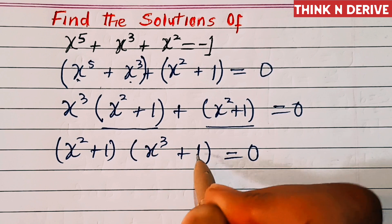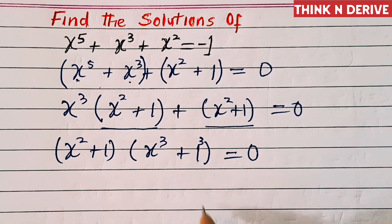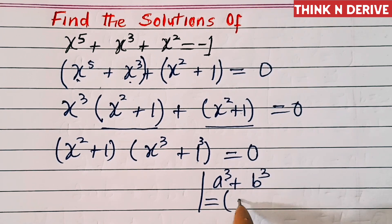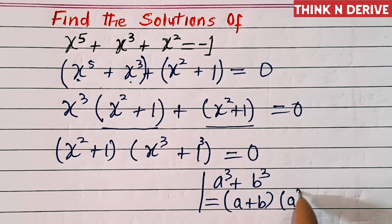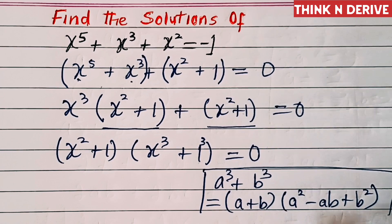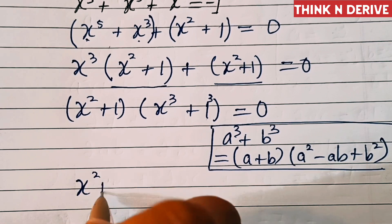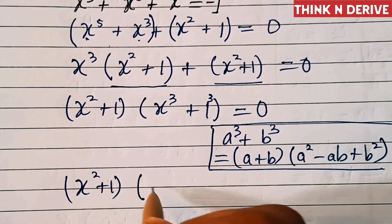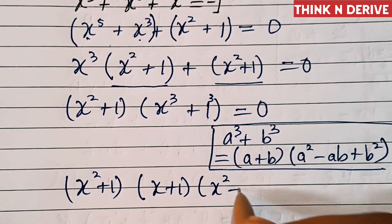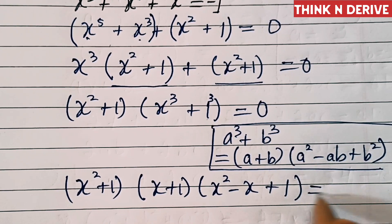Now this x³ + 1, we can write this as x³ + 1³. These are of the form a³ + b³, and we know a³ + b³ = (a + b)(a² - ab + b²). So this equation will look like (x² + 1)(x + 1)(x² - x + 1) = 0.